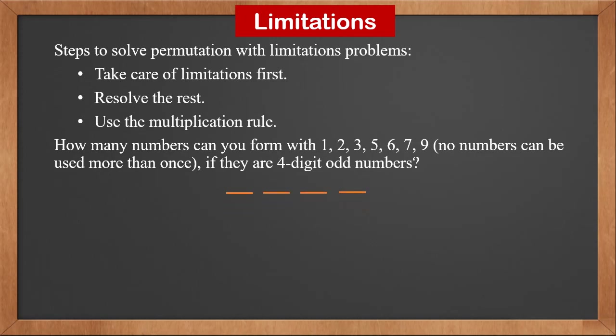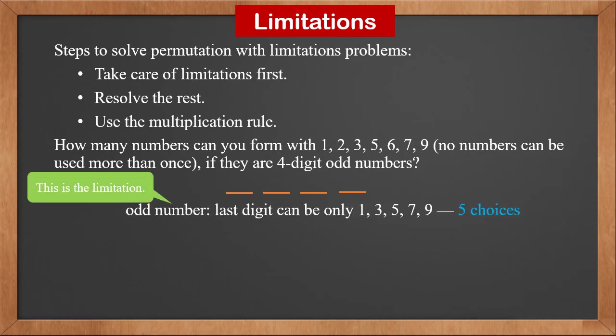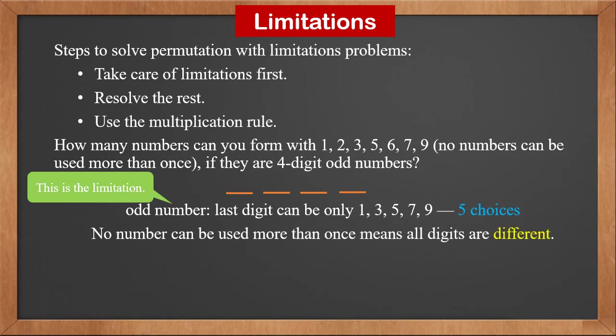Here, we use seven numbers to fill four positions. Since they are odd numbers, the last digit can only be 1, 3, 5, 7, or 9 — so there are five choices for the last position. Since no number can be used more than once, all digits are different and we can use permutation. After the last digit is chosen, the remaining three positions can be filled by the rest six numbers: that's 6P3 choices. Using the multiplication rule, the answer is 5 × 6P3, which is 600.